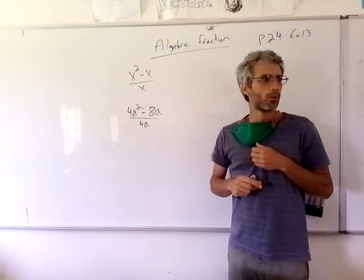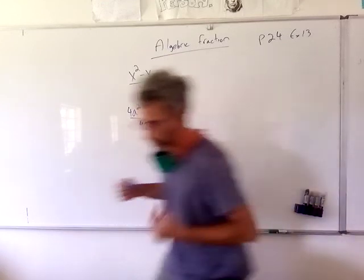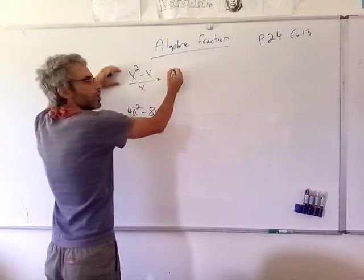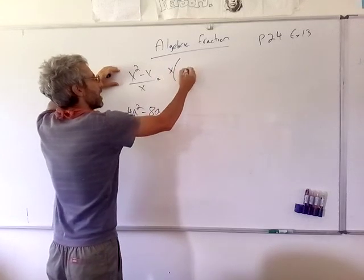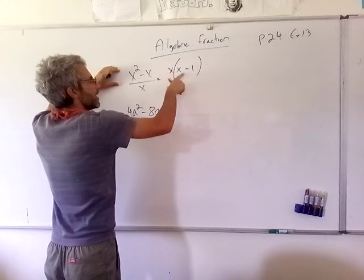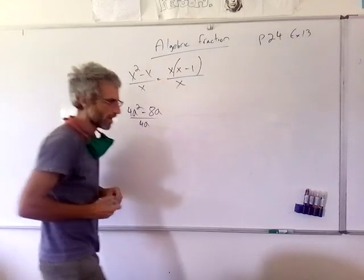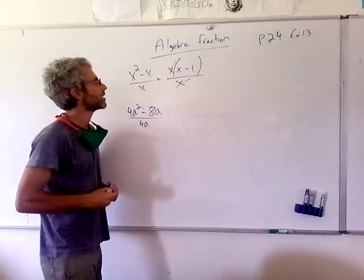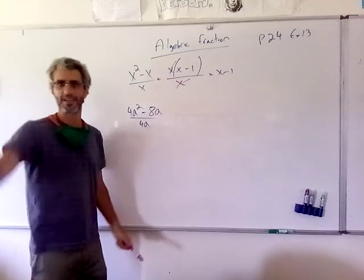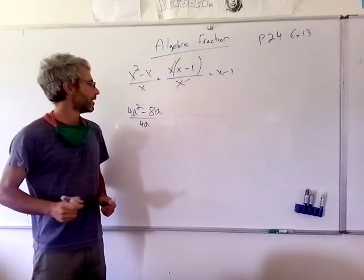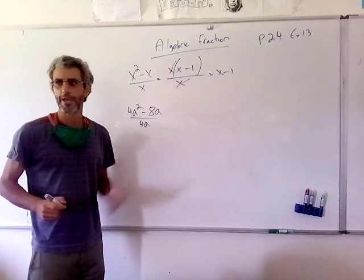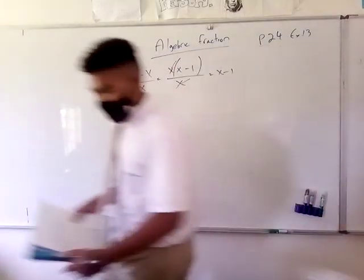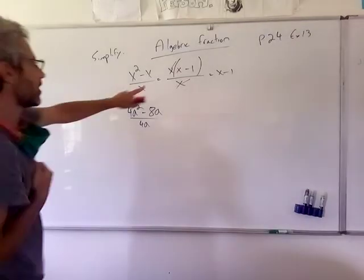We've got a fraction and we want to make it simpler. I can factorize the top — if I pull out an x, I'll have x times (x minus 1) in the bracket. So x squared minus x divided by x: I cross-cancel the x, and I'm left with x minus 1, which is simplified. That's the instruction you'll see in a test — 'simplify.'